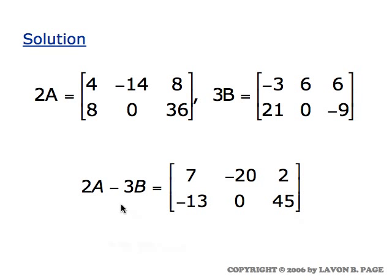And if you do that, this is what you get. Two A minus three B: four minus a minus three is seven, minus fourteen minus six is minus twenty, and so forth.